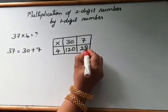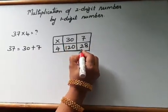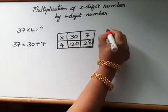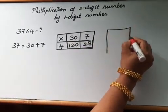4 times 3 is 12 and put the 0 as it is so it becomes 120. 4 times 7 is 28. Now let's add the product that we got after multiplying.